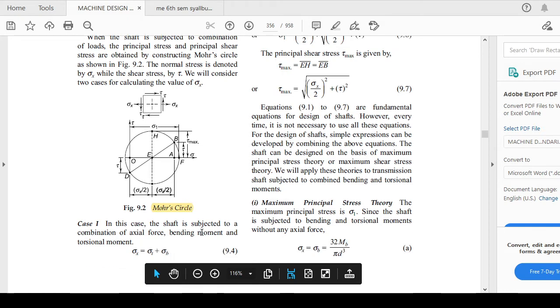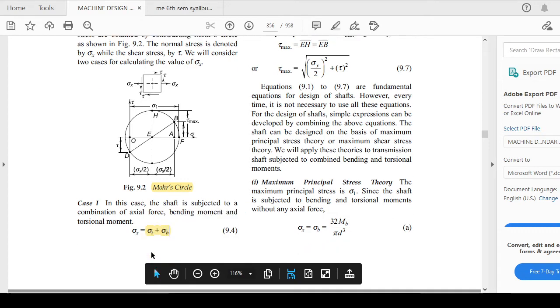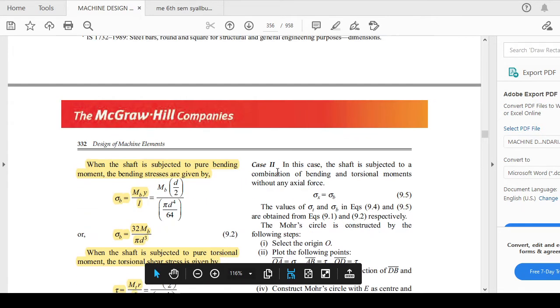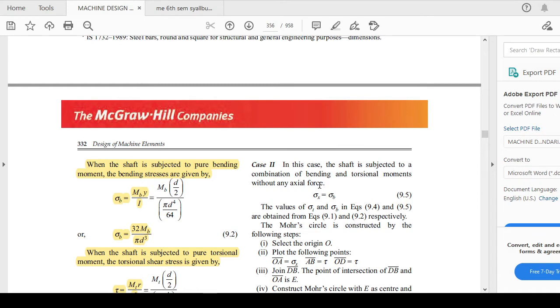In this case, the shaft is subjected to a combination of axial force, bending moment, and torsional moments. You have torsional stress as well as bending stress, so your σ_x will be this. In case the shaft is subjected to combination of bending and torsional moment without any axial force, then σ_x = σ_b.